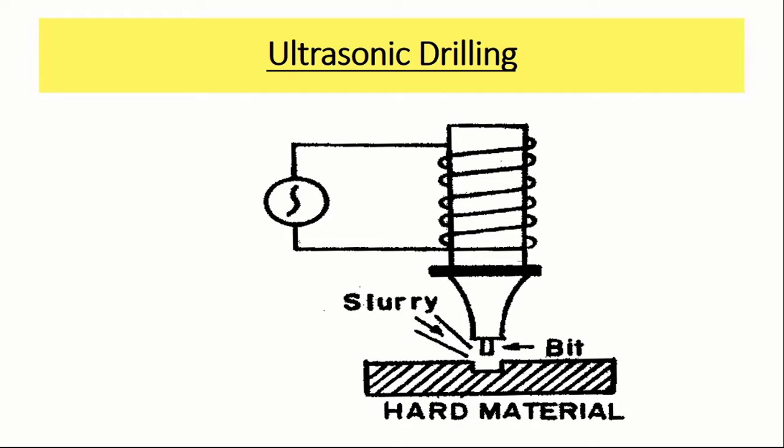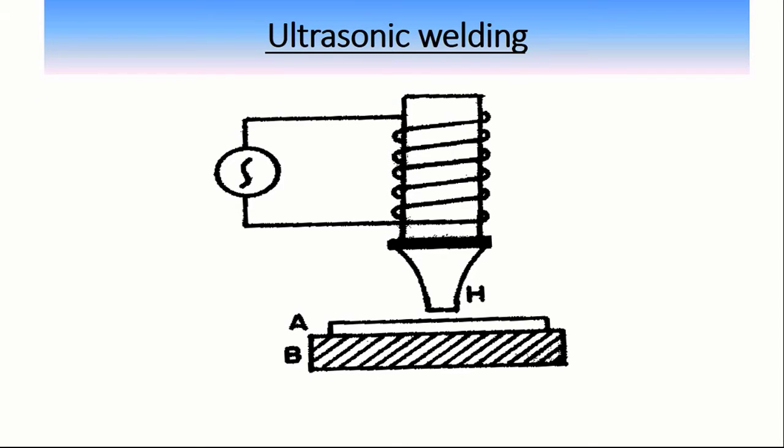Ultrasonic welding: The properties of some metals change on heating, therefore such metals cannot be welded by electric or gas welding. In such cases, the metallic sheets are welded together at room temperatures by using ultrasonic waves.